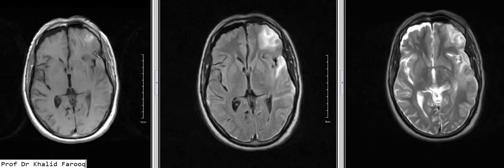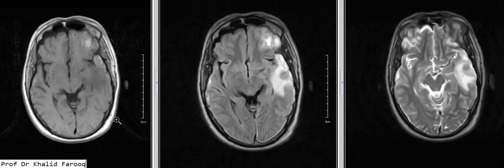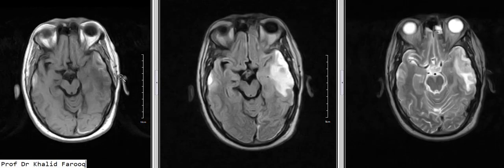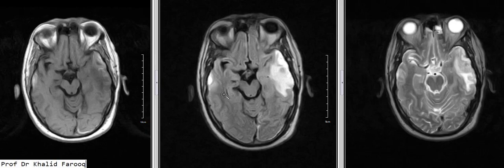We can see abnormal signals in the left frontal lobe and left temporal lobe. Similarly, we can see abnormal signals in the cortical portion of the right temporal lobe as well.